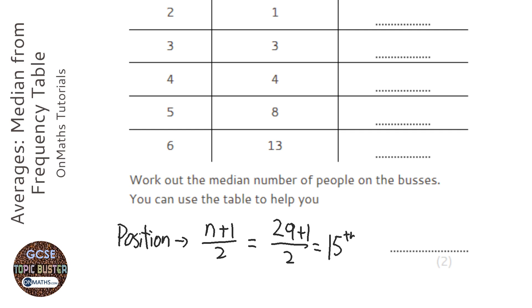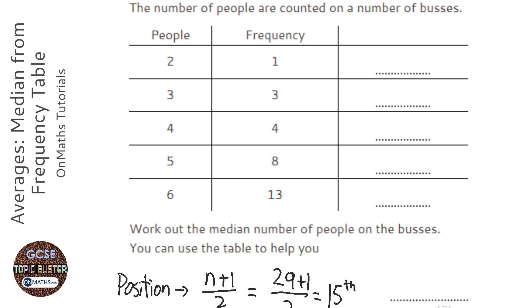This gives us the position of the median, which is going to be useful. Something else I write on the table is the running total. We're just going to do a running total, so it's only 1 in the first one, and we're going to add the 3 there to get 4.